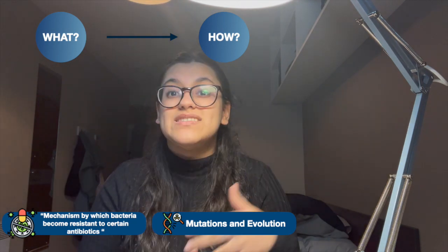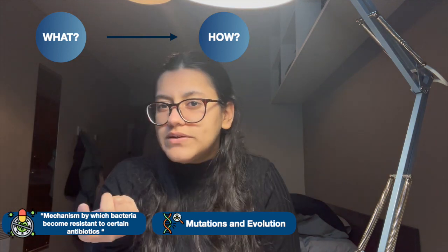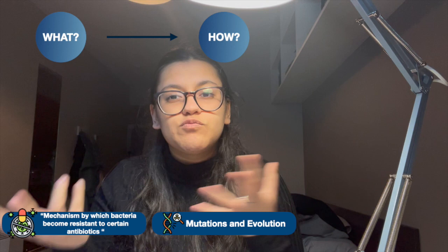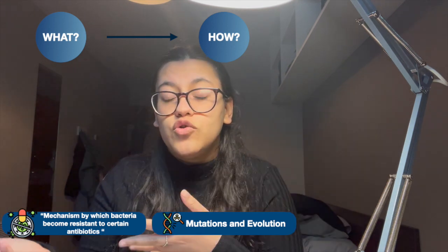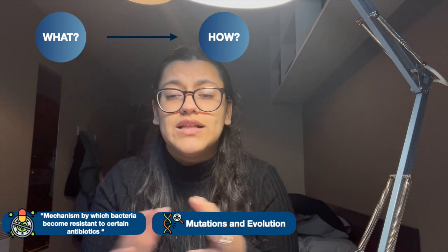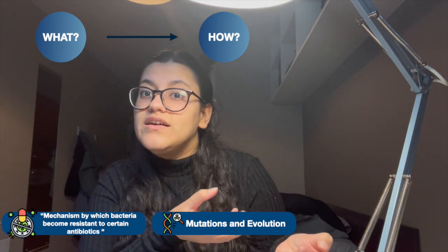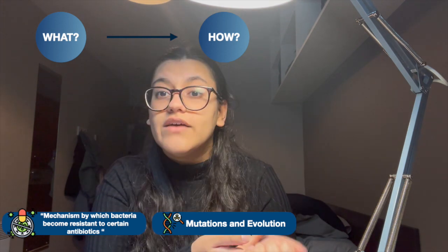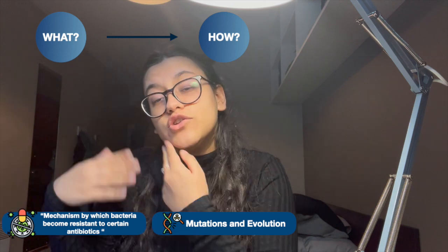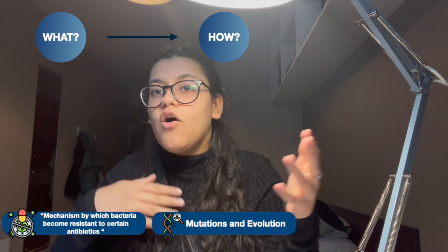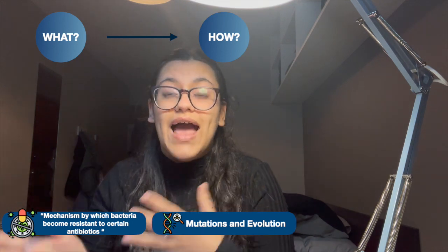For example, you have a host of bacteria in your body and you take a course of antibiotics that kills 99% of them. However, 1% survive because they have a mutation — purely by chance — that makes them resistant. Since that strain is the only one left alive, it continues to reproduce, passing that mutation to its offspring. All new bacteria will then have that resistance.